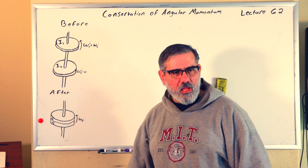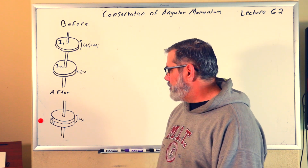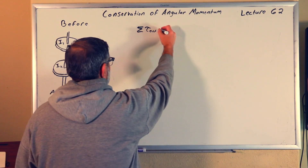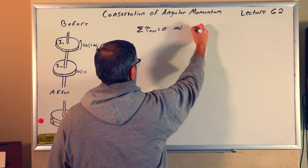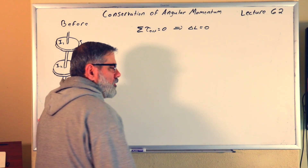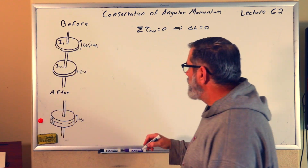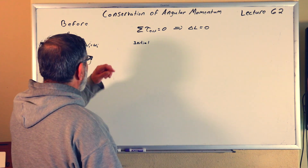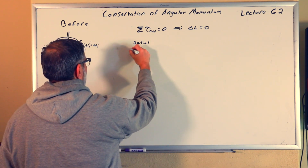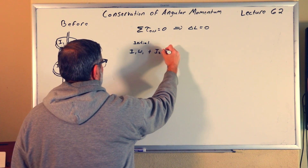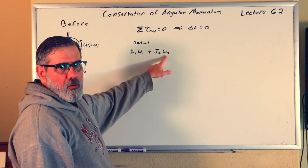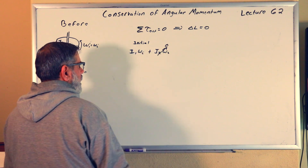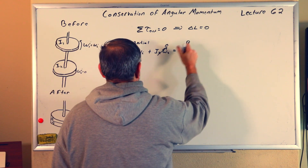We call it coming to equilibrium. There are no external torques on the system; therefore the change in angular momentum will be zero. So in the before picture, the initial angular momentum is I1 times omega1 plus I2 times omega2. But omega2 is zero, so it's just I1 times omega initial. This must equal the after: I1 times omega final plus I2 times omega final, since both disks end up rotating at the same final velocity — just like an inelastic collision.